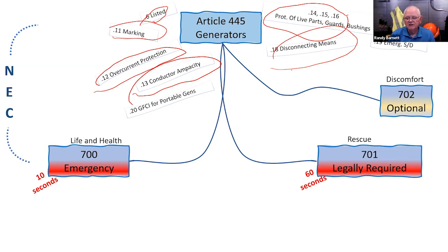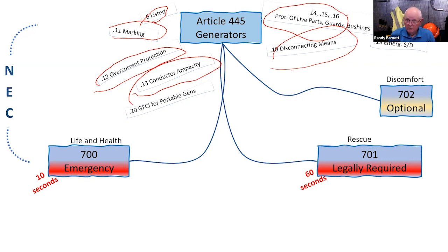Disconnecting means — I've got to have a disconnect on my generator. I have to have a way to disconnect those conductors somewhere between where I tap off the generator and where I head out to the load. It might be a disconnect switch or a breaker. That disconnect can be located internal to the structure where the generator is housed, so I would open a door, go into the room, and operate the disconnect. Those are really the basic requirements for Article 445 on generators — only a couple of pages long, but with good information.